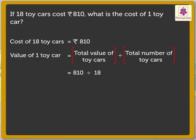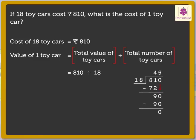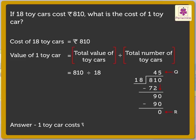So, here we divide 810 by 18 to get the value of one toy car. Let us divide the numbers. On dividing 810 by 18, we get quotient as 45 and remainder as 0. Thus, one toy car costs 45 rupees. Let us buy a few of them.